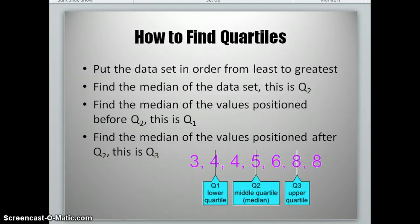First thing you're going to do is put your data set in order from least to greatest. Then you're going to find the median of the data set. This is your Q2, so you're really finding your second quartile first. If you take a look at the example on the bottom of your screen, you'll see we have a couple of data values listed already in order. Your Q2 is your median of your data values. In this case, it's the number 5.